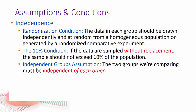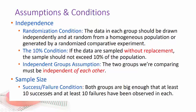Also we still need the independent groups assumption that the two groups are independent of each other. And sample size, we still need that success failure condition that both groups are big enough to have at least 10 successes and at least 10 failures.